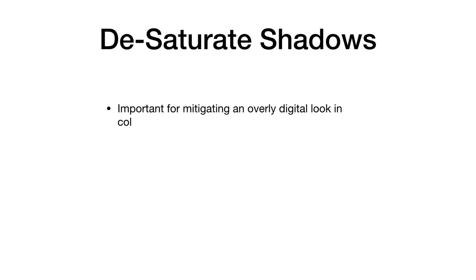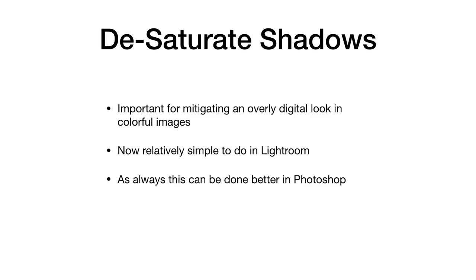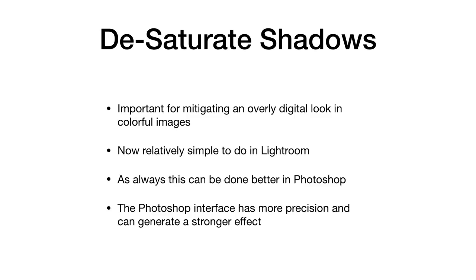The technique we're going to look at is one for desaturating shadows in a colorful image. This is an important technique which can improve the naturalness in colorful images, especially ones where color saturation has been pushed in the raw process stage. This technique involves luminosity masking, which is a new feature in the latest version of Lightroom. We'll compare the different approaches and see how the Photoshop approach offers more precision and a stronger effect.